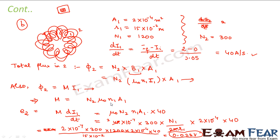If you understand the concepts, there are just a couple of expressions you need to use: one is the mutual inductance expression, and the other is calculating φ using the normal expression for flux — the product of magnetic field and area. So here we conclude this lesson on electromagnetic induction. The concepts of electromagnetic induction are extremely important, and I really want all of you to go through each of these concepts.